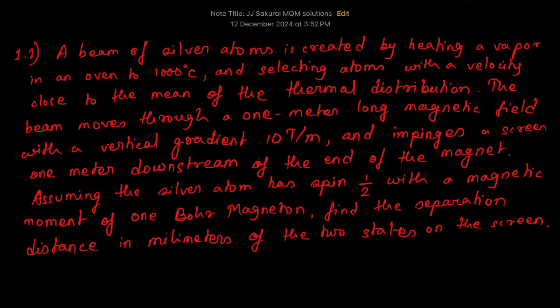A beam of silver atoms is created by heating a vapor in an oven to 1000 degrees centigrade and selecting atoms with a velocity close to the mean of the thermal distribution. The beam moves through a one-meter-long magnetic field with a vertical gradient of 10 tesla per meter and impinges a screen one meter downstream of the end of the magnet. Assuming the silver atom has spin-half with a magnetic moment of one Bohr magneton, find the separation distance in millimeters of the two states on the screen.